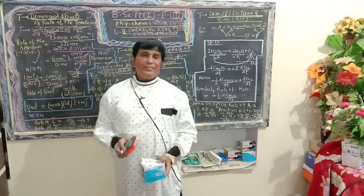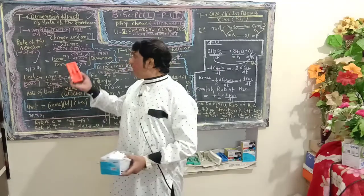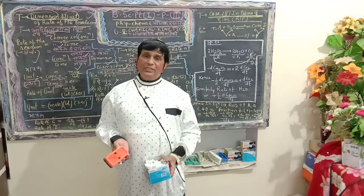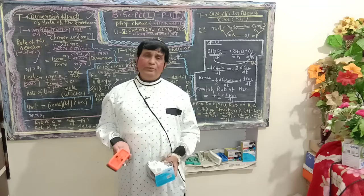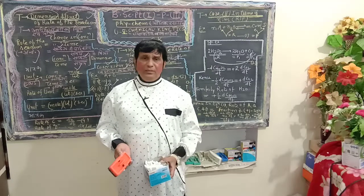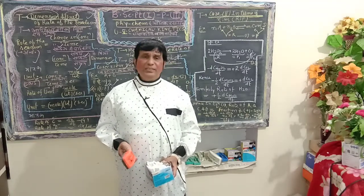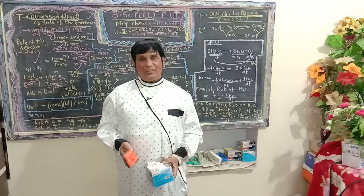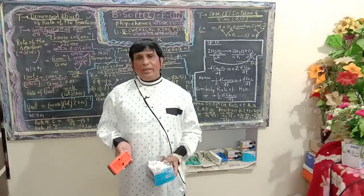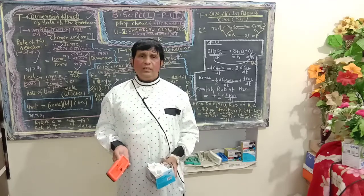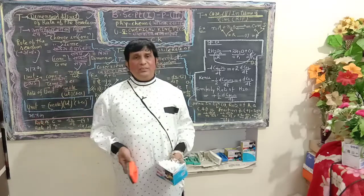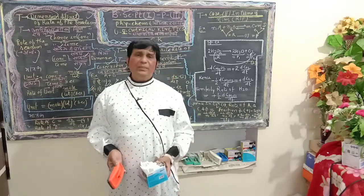Now my question to all BSc Part 1 students: is concentration divided by time defined as dimension or unit? Some students answer 'units,' and some answer 'dimension.' The correct answer is: concentration upon time is the dimension of rate of reaction.